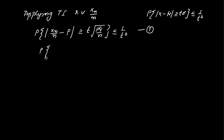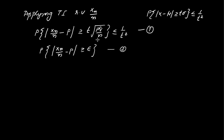Applying this, the probability of the modulus of XN/n minus p being greater than or equal to epsilon tends to 0 as n tends to infinity. Comparing expressions 1 and 2, we set epsilon equal to t times the square root of pq/n.